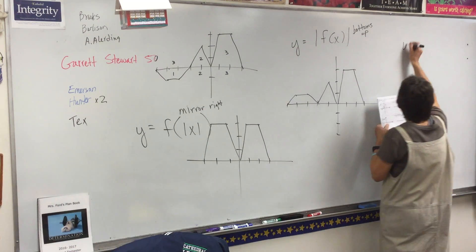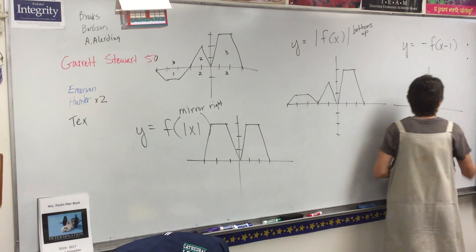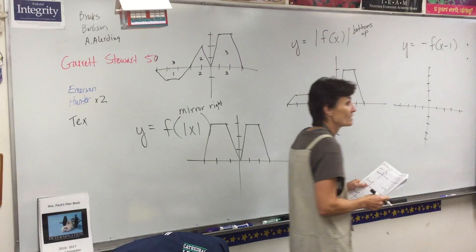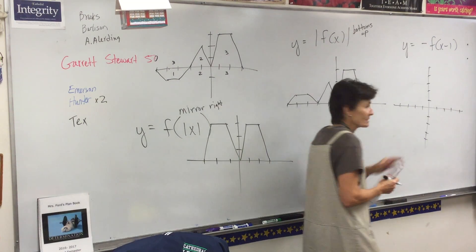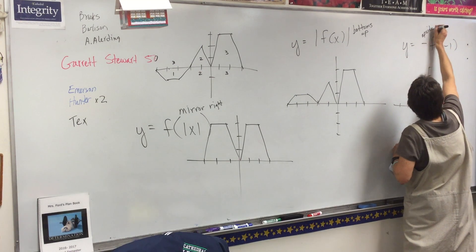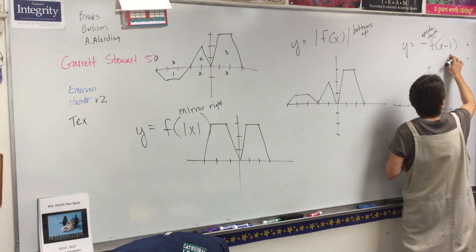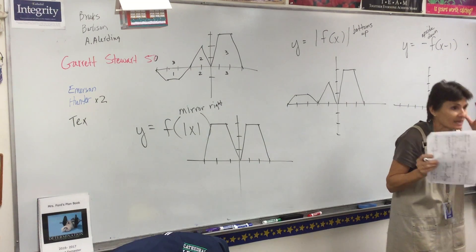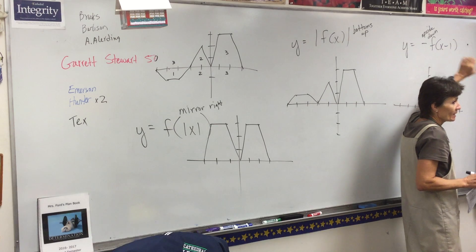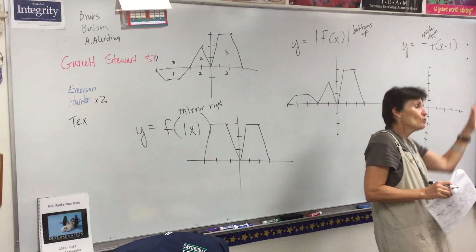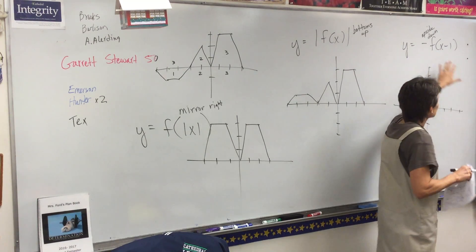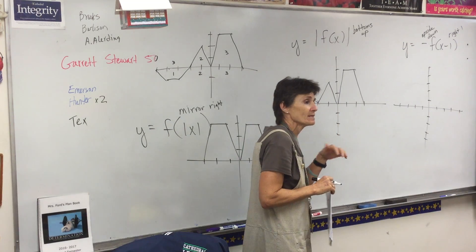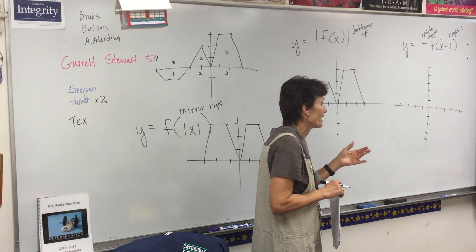Alright, what's happening here in C? Two things are happening. What's the negative do? That's an upside down. What does this do? This is not a sideways flip. This is a subtraction. What do adds and subtracts do? Move you. How does this move? To the right one. So you are going to take the picture and move it to the right one and turn it upside down.